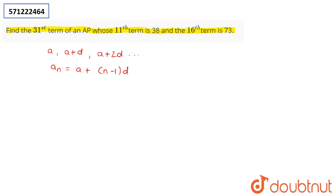Now, if you know this much, I have to find this problem. I neither know the first term or the common difference, but I know that the value of 11th term is 38 and the value of 16th term is 73. So let us use that.